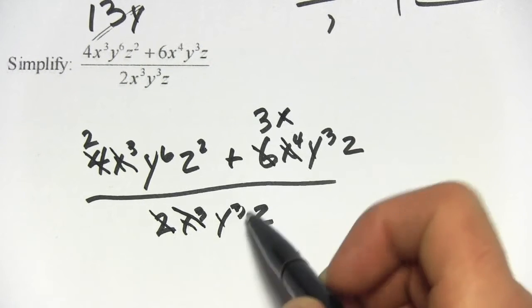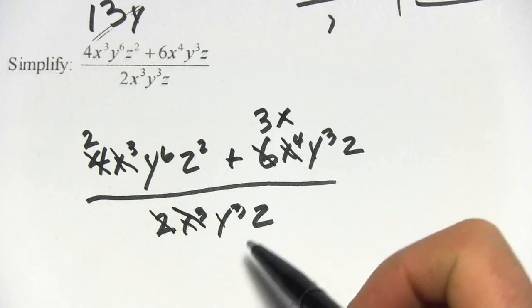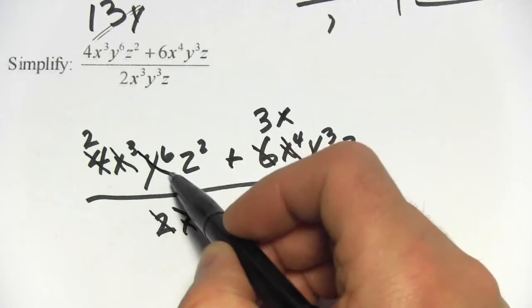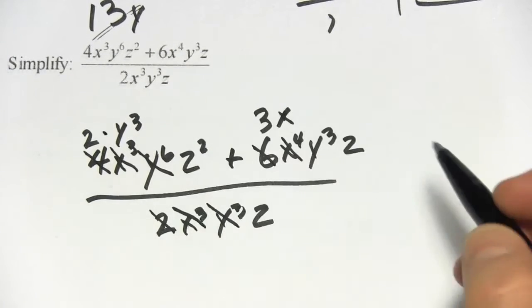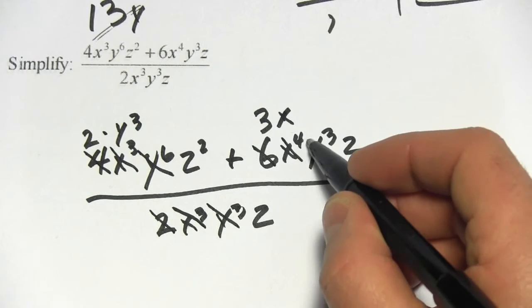Let's go to the y terms. Y to the 6th and y to the 3rd, we got a y to the 3rd on the bottom. So if we cancel here, y to the 6th divided by y to the 3rd would leave y to the 3rd. So those two things are multiplied by each other and here y to the 3rd divided by y to the 3rd, that just cancels.